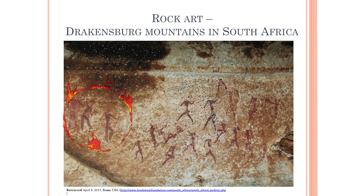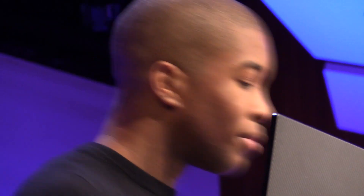For some primary sources: this cave painting found in the Drakensberg Mountains of South Africa, dated to roughly 10,000–20,000 years ago, shows individuals on the right side of the image attempting to fight three figures who appear very strong, almost radiating with energy. Perhaps ancient humans were able to document the existence of superhumans long before we did.